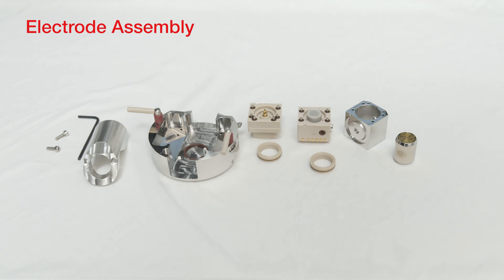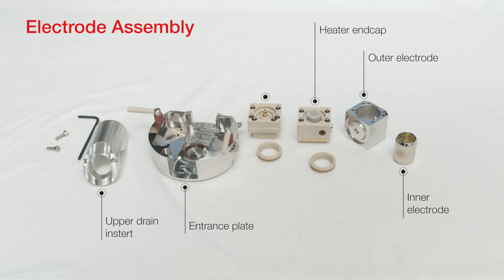The electrode assembly consists of an upper drain insert, an entrance plate, inner electrode, outer electrode, heater endcap, RF endcap, and two electrode bushings. If the medium-sized O-ring on the entrance plate should come off with the electrode stack, simply place it back onto the entrance plate. However, if the small O-ring should fall from the endcaps, they will need to be reinstalled. Please note that the O-rings that face the electrodes are a different size than the O-rings on the sides of the endcaps.